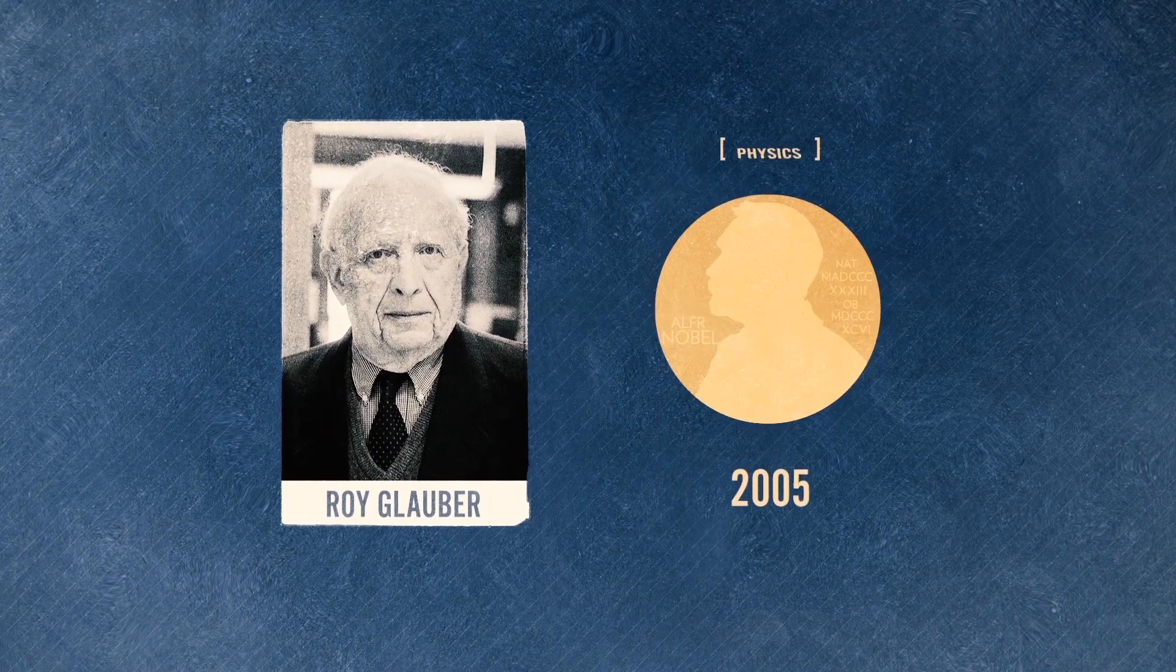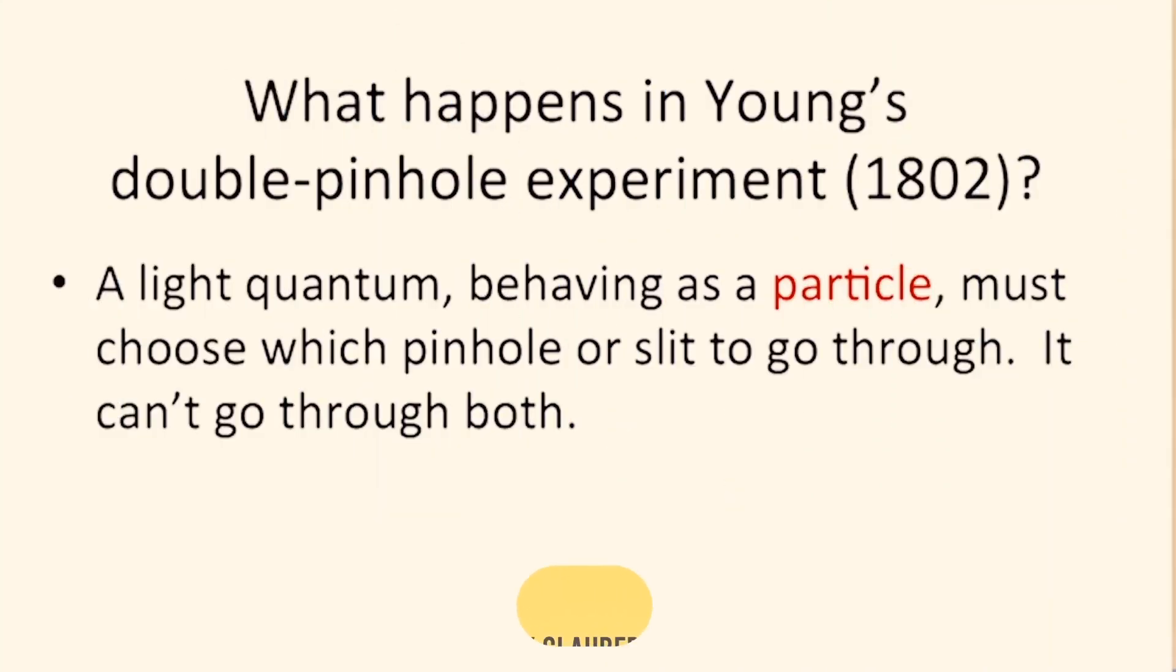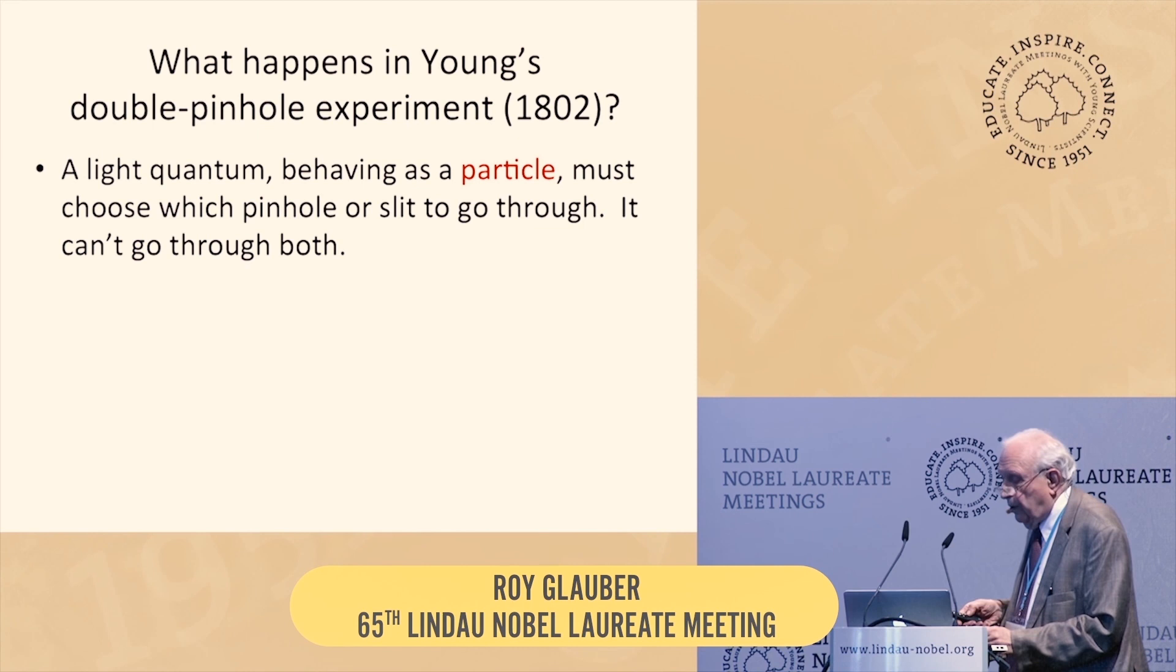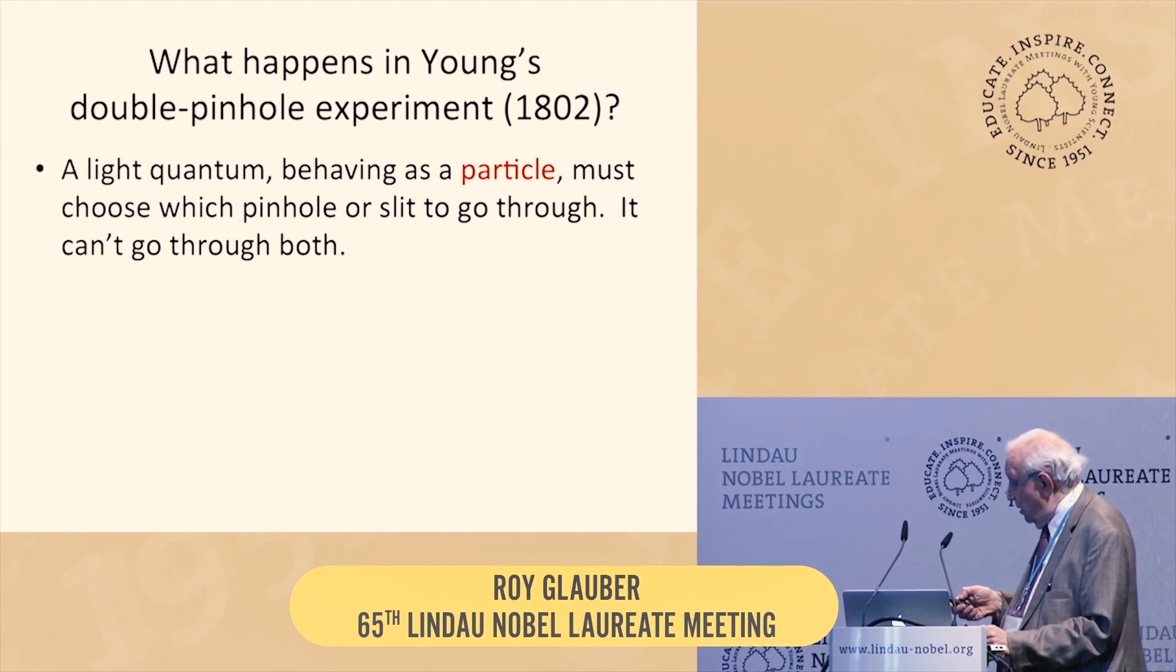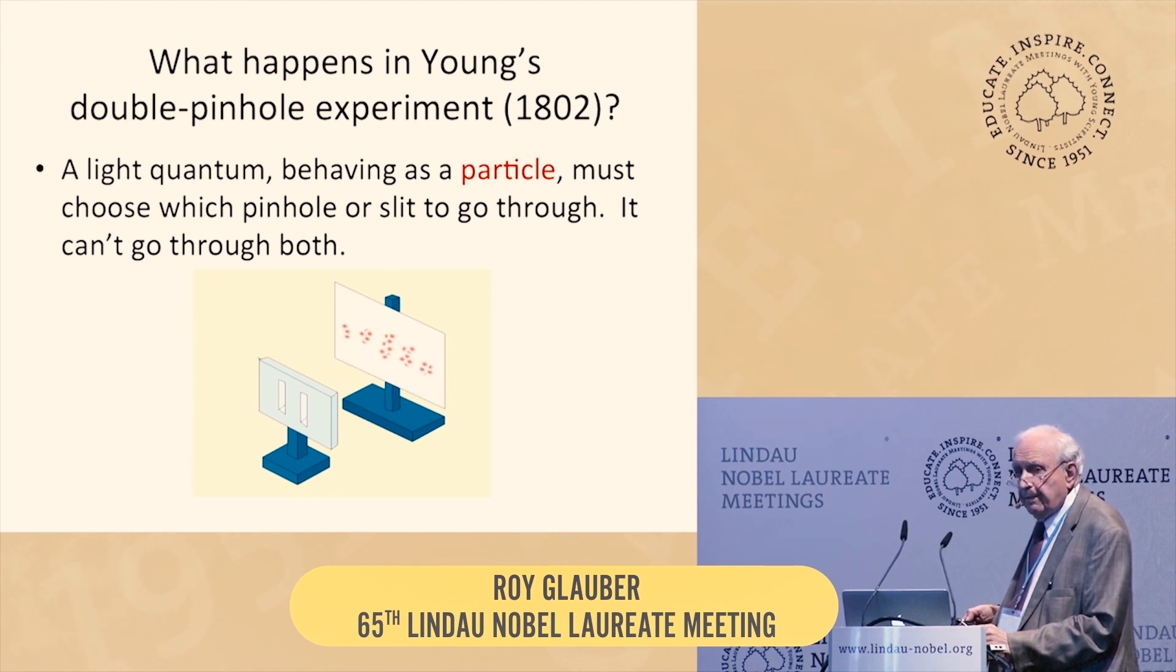Roy Glauber explains the implications of the double-slit experiment with respect to individual photons. If light is going to be a particle or consist of particles, those quanta are not going to split and go partially through each of the two holes in Young's experiment. They have to go through the one hole or the other. And then the question is, how do you get fringes?